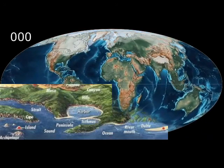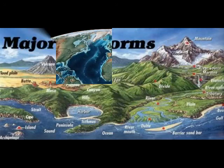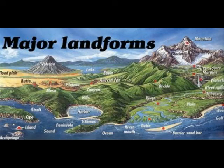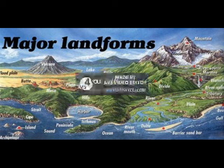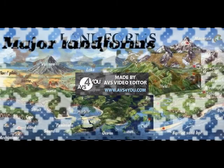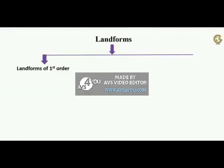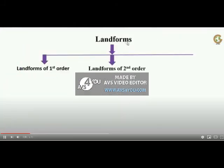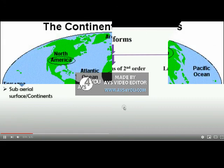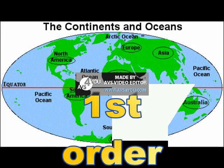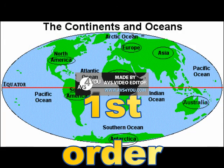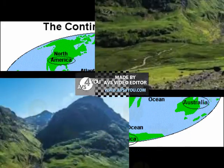The surface of the earth is not even because it has lofty mountains, deep oceans and other landforms. These landforms can be classified as first order, second order, and third order. First order consists of continents and oceans.